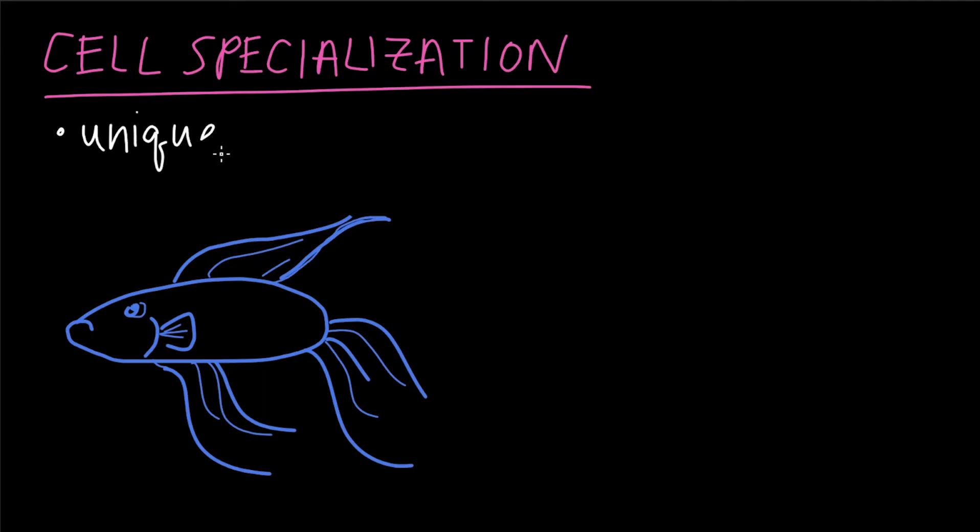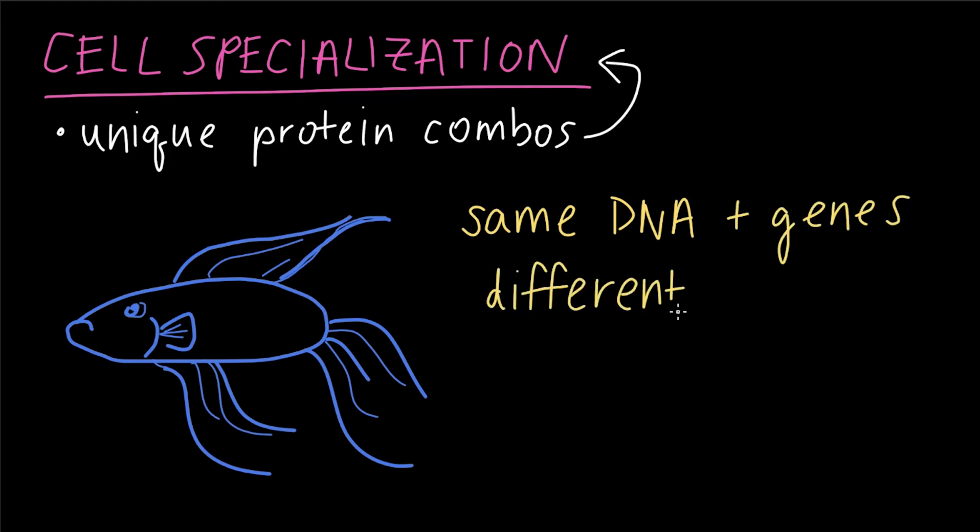Cell specialization comes from unique combos of proteins. It's important to note that every cell in an organism contains the same genes. All of Bob's cells contain the same DNA and genetic information, whether it's on his tail or in his eye. But what makes their functions different is which subset of genes are expressed or used to build proteins in the different cell types.